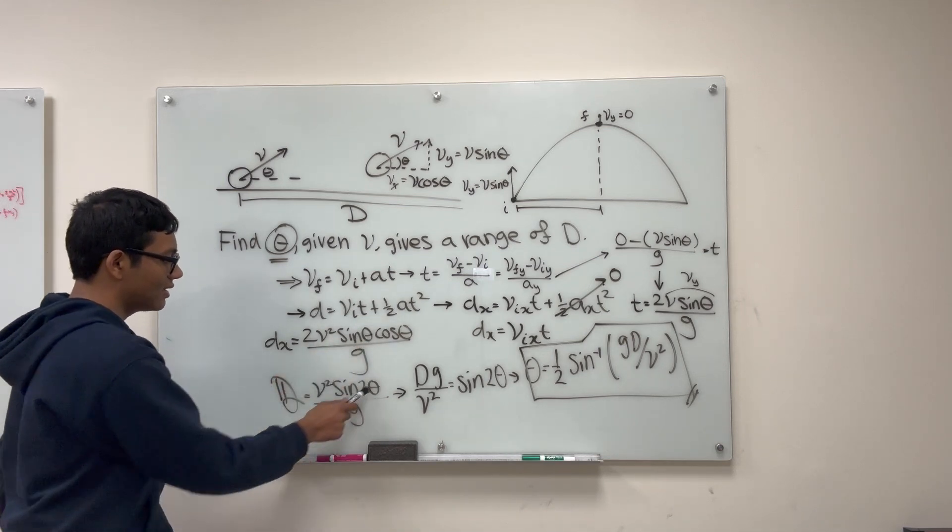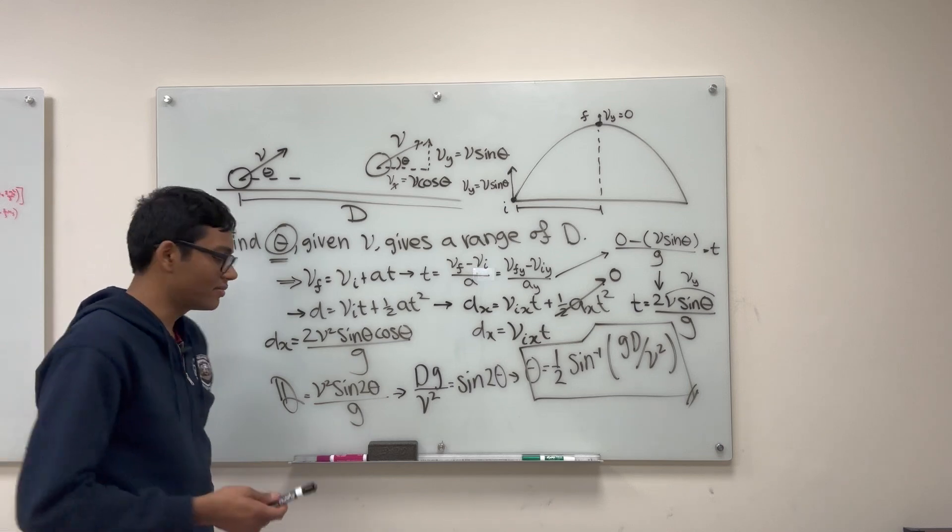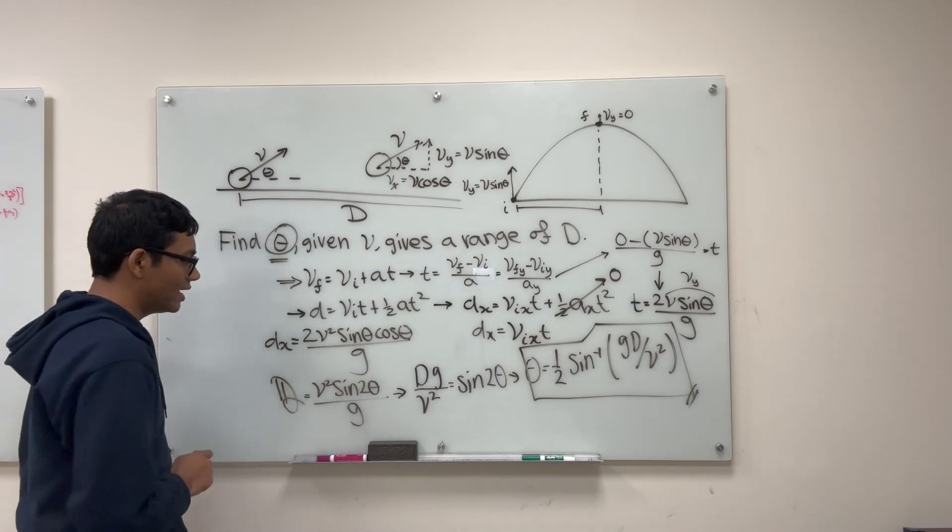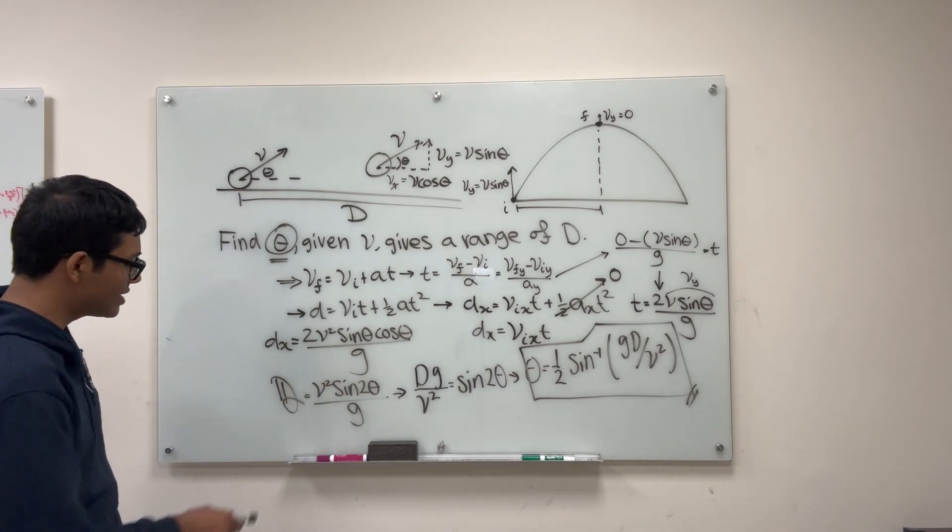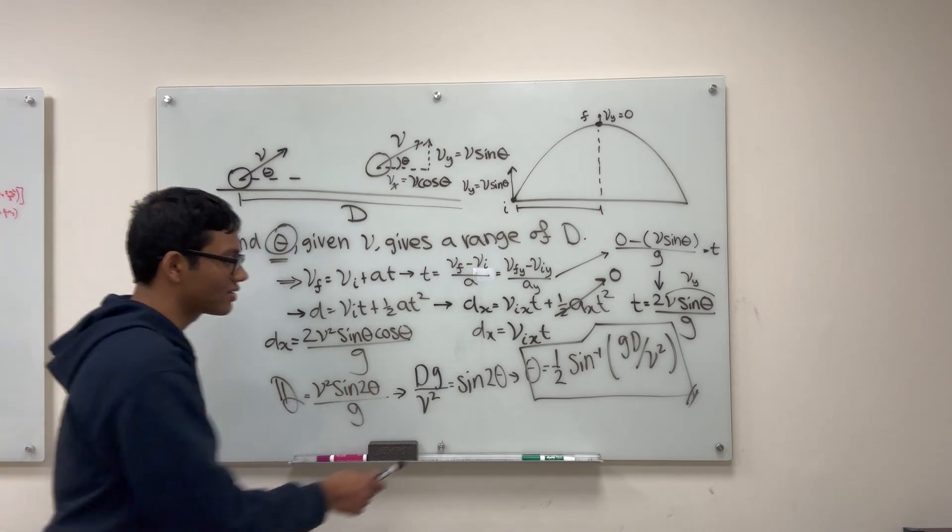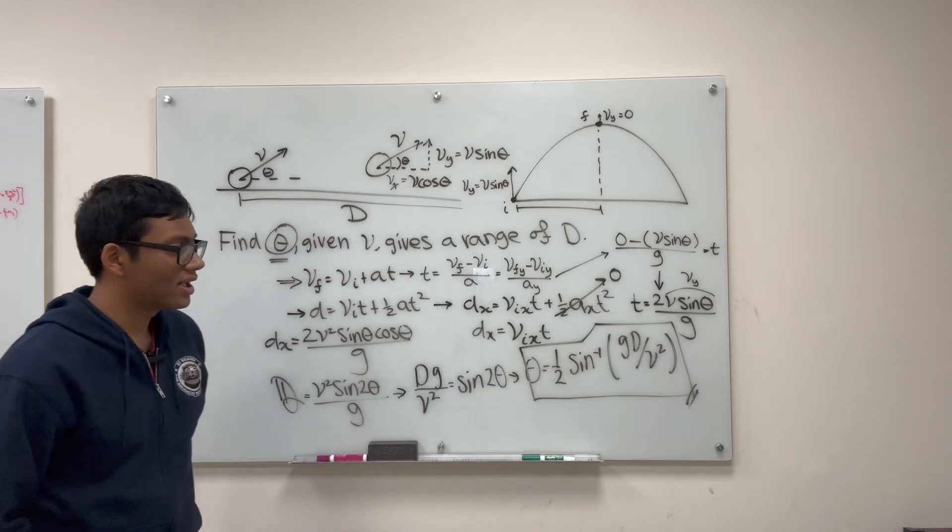And we get 2 v squared sine theta cosine theta over g for the range. And then 2 sine theta cosine theta is simply, via trigonometric rules, sine 2 theta. And then we simply solve for theta as a function of the range and the velocity.